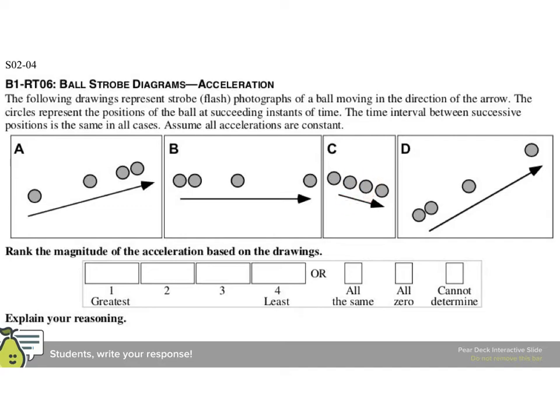In C, the distance traveled between flashes is the same, so the velocity is the same, so the acceleration here is zero. That's going to be, C is going to be our last case. If we then look at the others, well, the others seem to be, it's hard to tell.